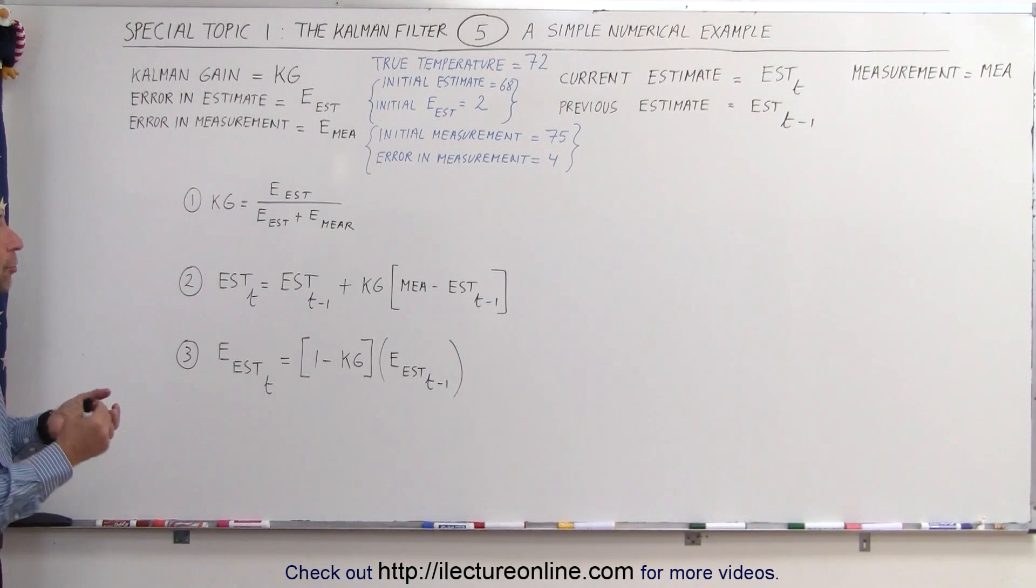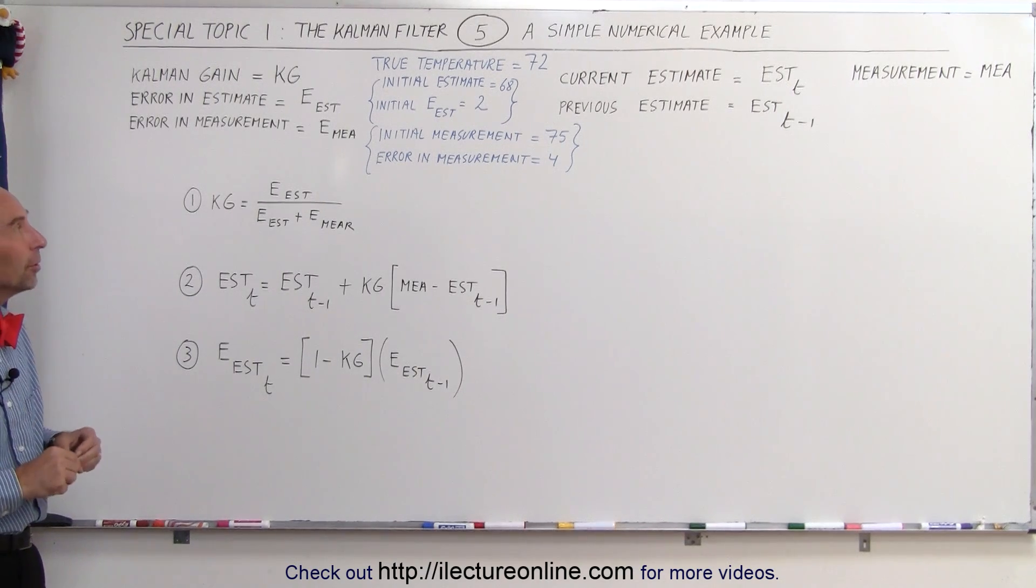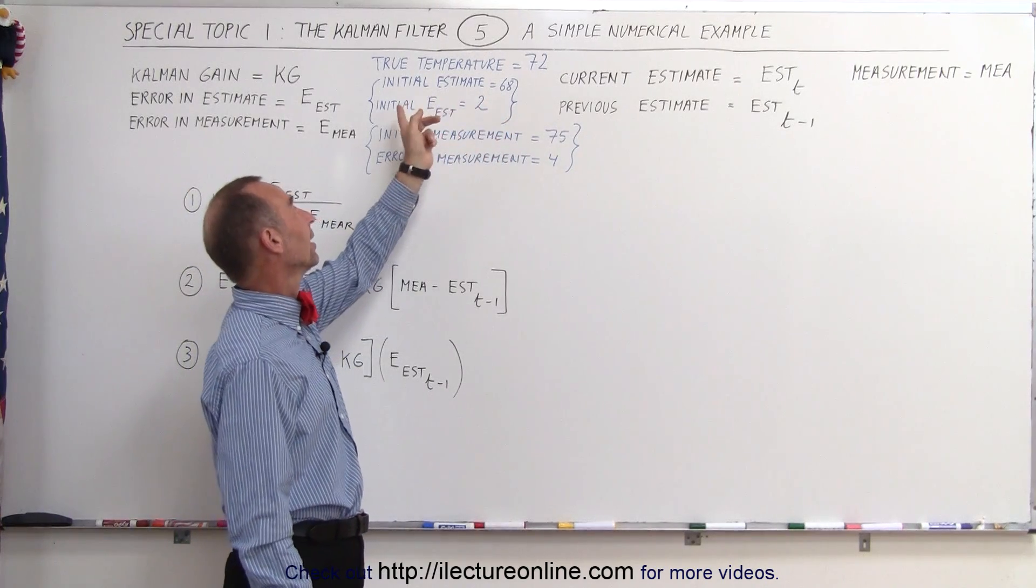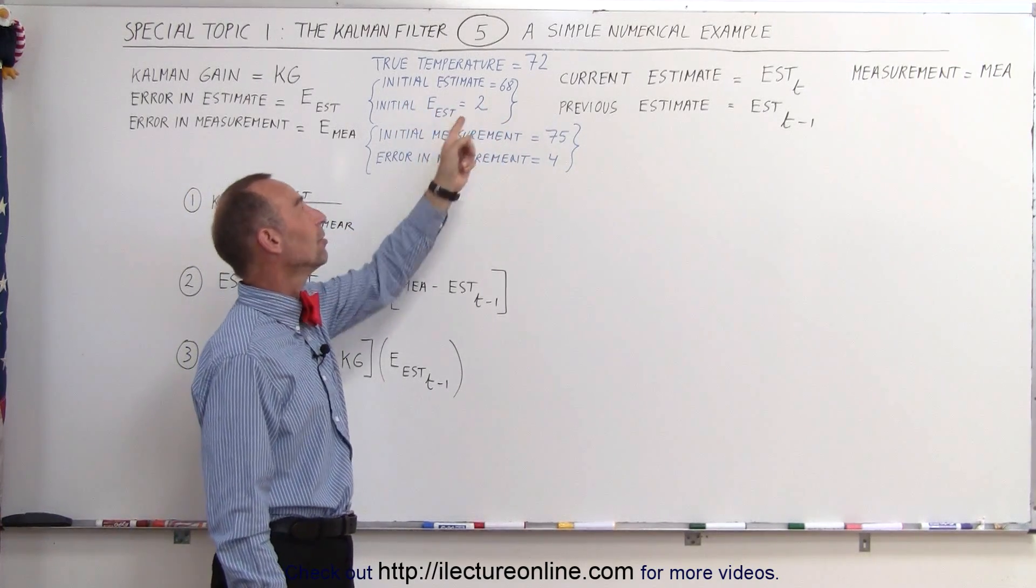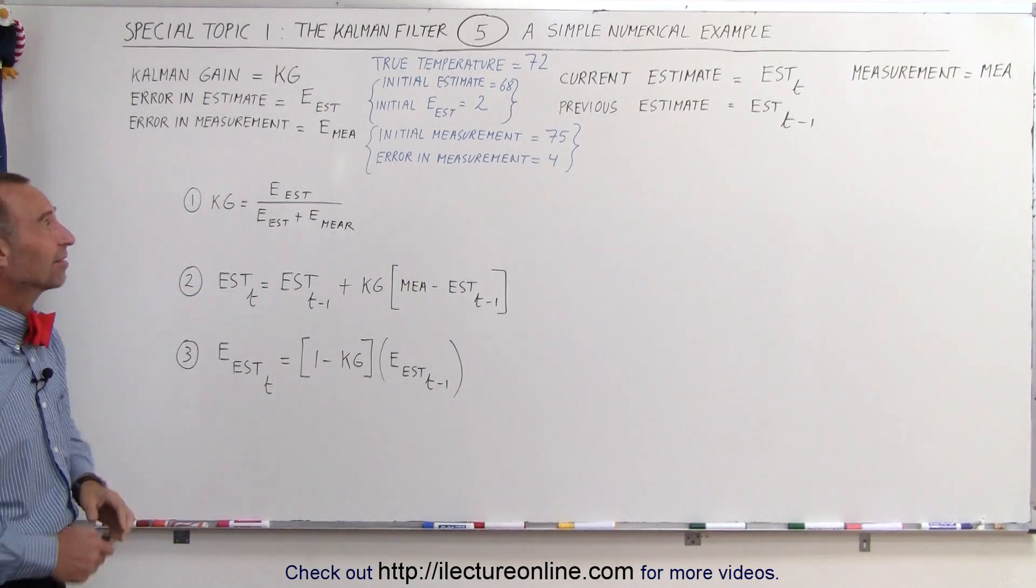So here we have an example where we're trying to find what the true temperature is, we're trying to estimate as much as possible. We have an initial estimate, could be anything, but let's put it at 68 and let's say that the initial error in the estimate is equal to 2, which in other words my estimate could be anywhere between 66 and 70.